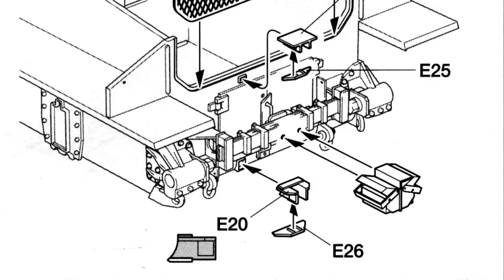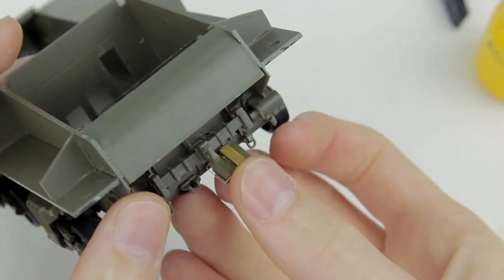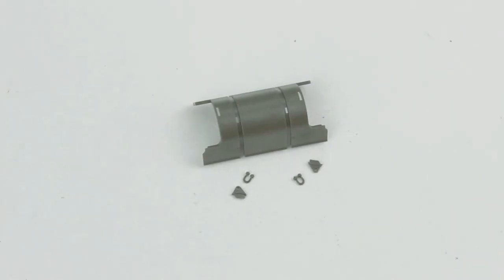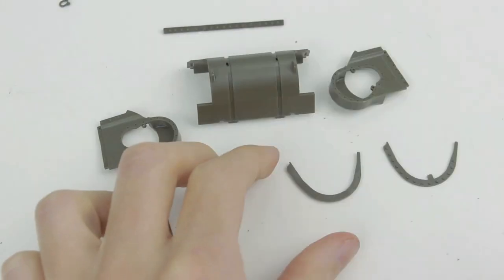The instructions weren't very clear as to where to attach the smoke discharger, and I only realized later in the build that the instructions were indicating to under the towing hook, as opposed to on top of it. The differential cover had a really nice texture and little serial numbers molded onto it.